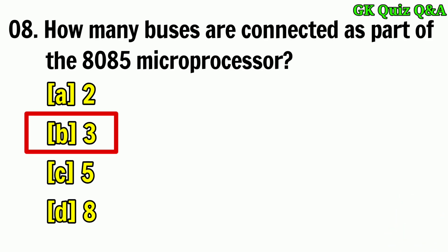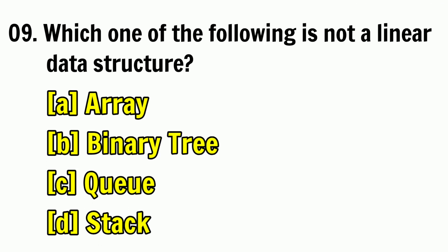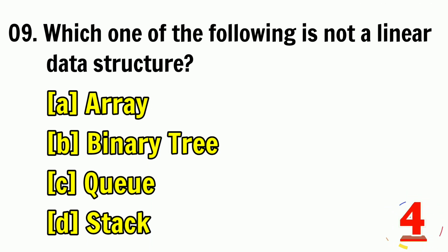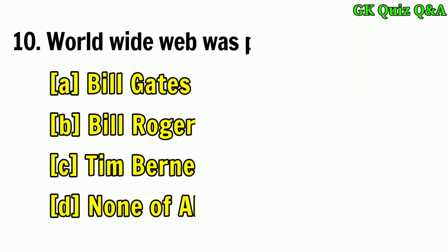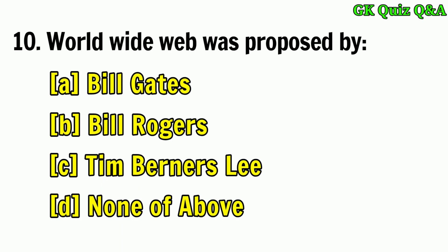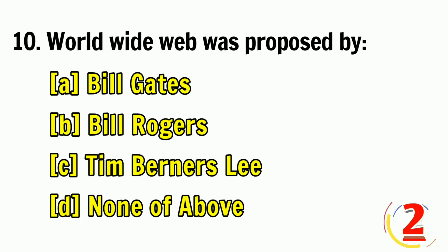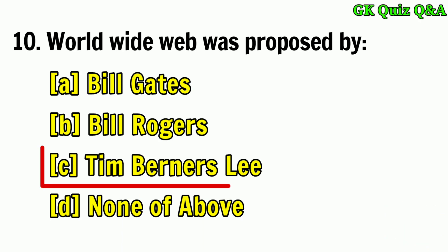Answer B: Three buses. Which one of the following is not a linear data structure? Answer B: Binary Tree. World Wide Web was proposed by — Answer C: Tim Berners-Lee.